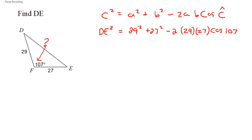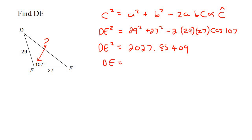Now to find DE, type all of this on your calculator: 29 squared plus 27 squared minus 2 times 29 times 27 times cos of 107. Don't round off because that is not our final answer. On my calculator I'm getting 2027.85409. Then to get DE by itself, take the square root. So DE should be 45.03 if you round to two decimal places.